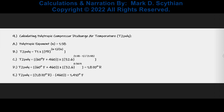Next is the polytropic compressor discharge air temperature — the actual air temperature you would measure if you had a temperature sensor placed at the discharge nozzle of the compressor. Based on the calculated proofs, pressure ratio, and the polytropic exponent, 1,410 degrees Fahrenheit will be the temperature of the air as it discharges from this particular compressor on this two-row fan.